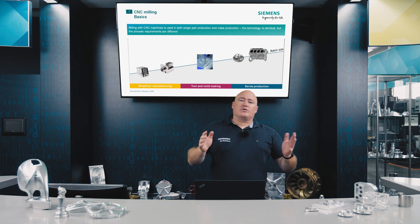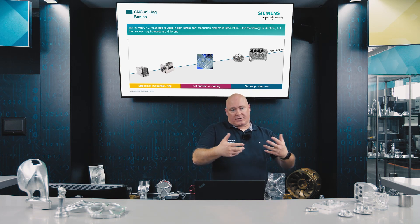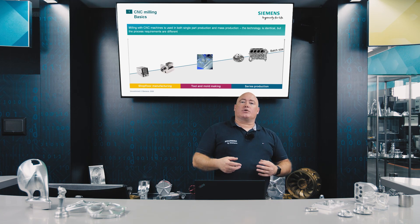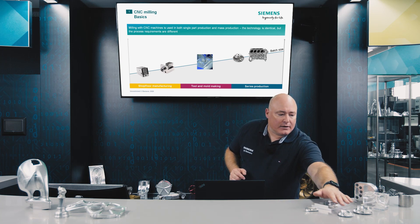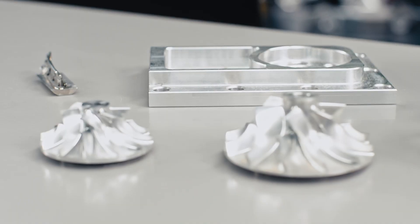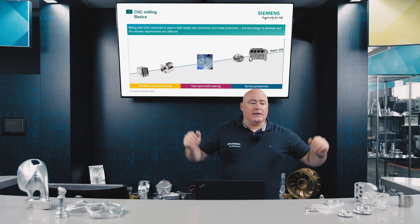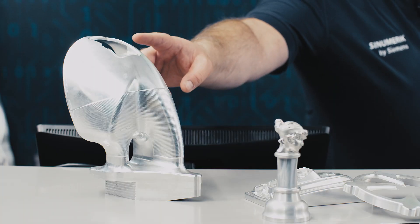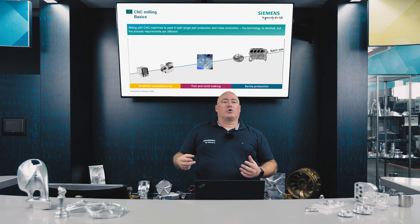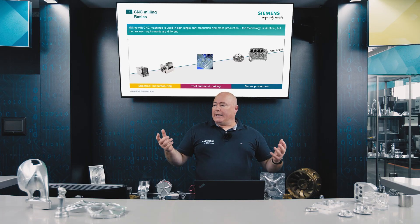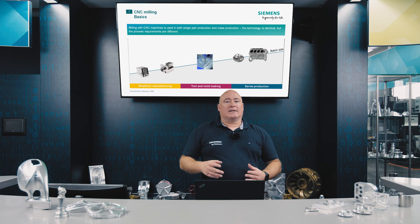Mold and die making is positioned somewhere between the two technologies. It can be used in single part production, because parts in mold and die making have the characteristics of a single part — for example, impellers, which first have to be designed and tested at the prototype stage before being widely deployed in industry. A very good example is the shape of a car wing mirror, which can be used in plastics injection molding and also in mass production.